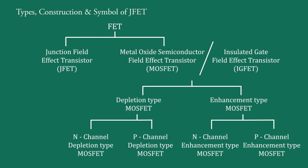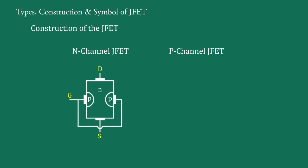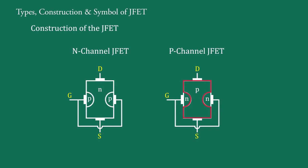Next, we will do the detailed study of JFET, starting with its construction. JFET is of two types: N Channel JFET and P Channel JFET. This figure shows an N Channel JFET and this figure shows a P Channel JFET. It consists of a bar of N type silicon with an ohmic contact at either end, and similarly a bar of P type silicon with an ohmic contact at either end.